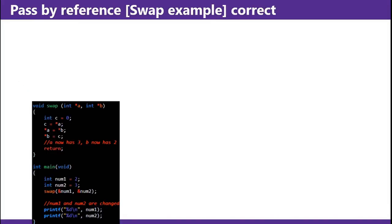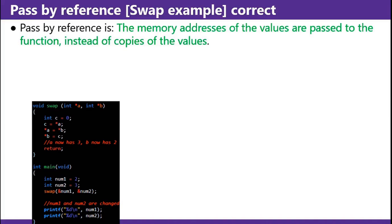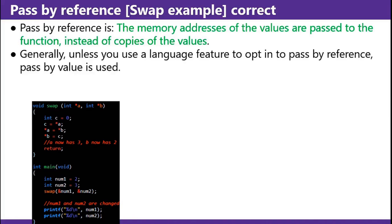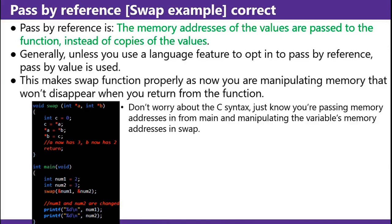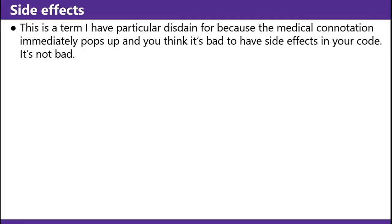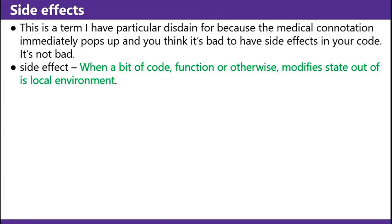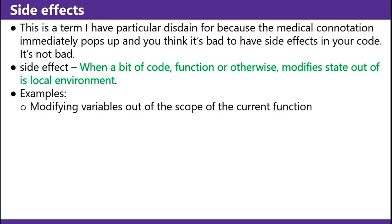Pass by reference — swap example the correct way. Pass by reference is when the memory address of the values are passed to the function instead of copies of the values. Generally, unless you use a language feature to opt in to pass by reference, pass by value is used. This makes the swap function work properly, as now you're manipulating memory that won't disappear when you return from the function. Side effects: a side effect is when a bit of code — function or otherwise — modifies state out of its local environment. Examples: modifying variables out of the scope of the current function, or using the print function.